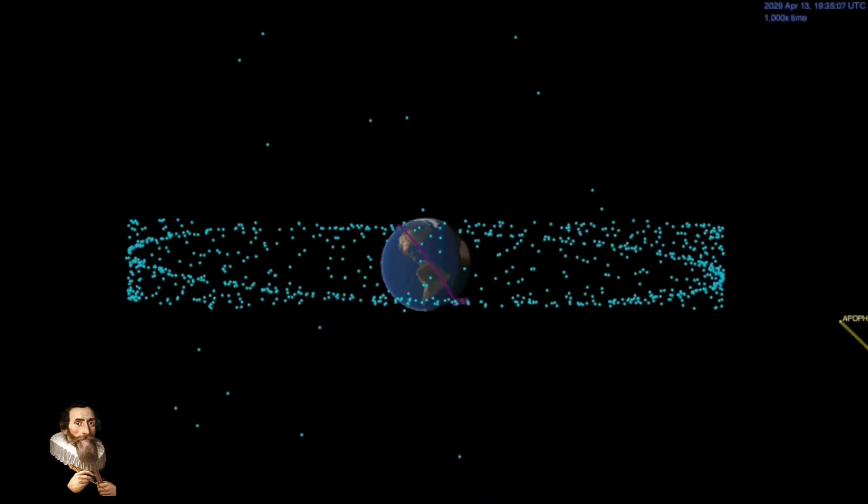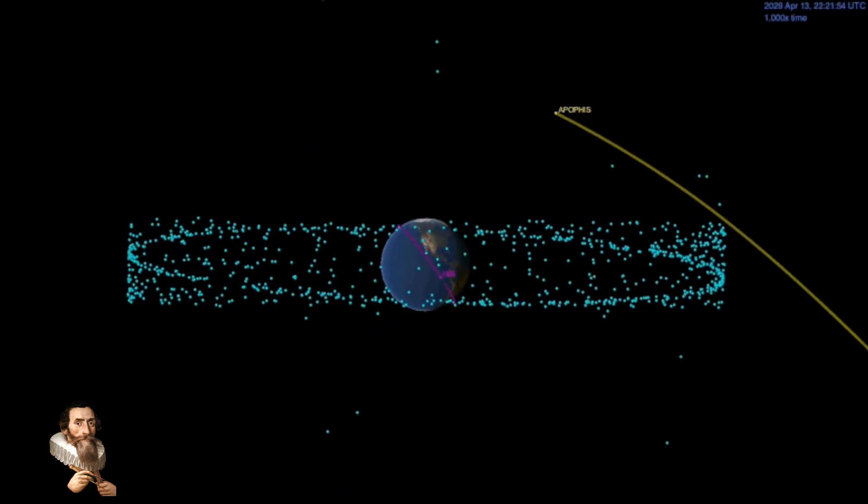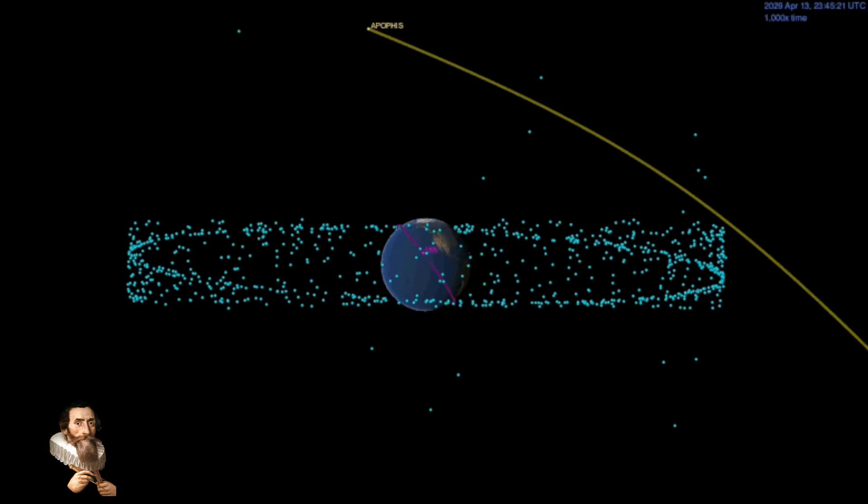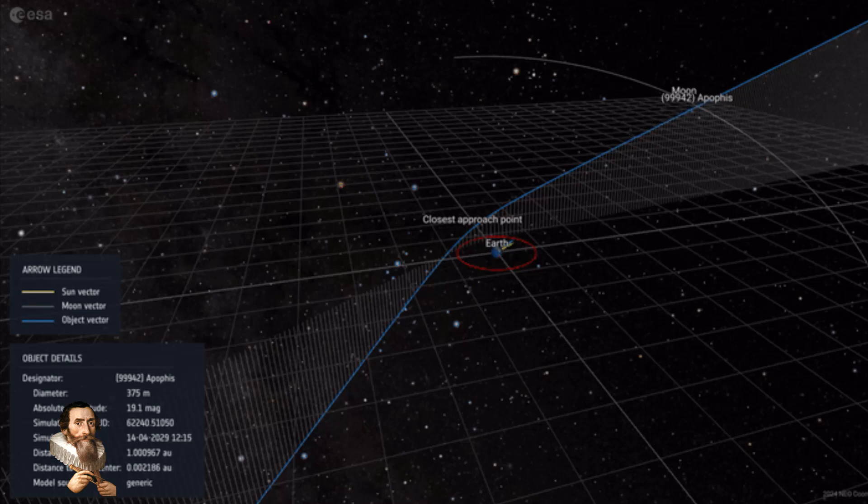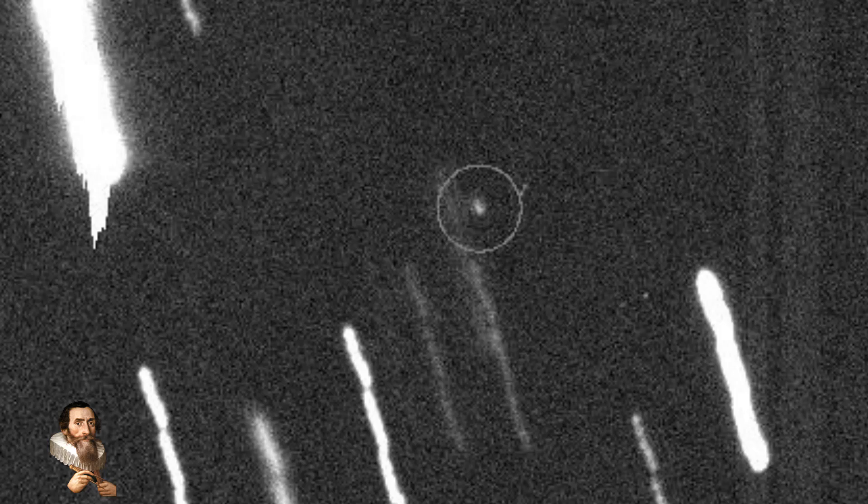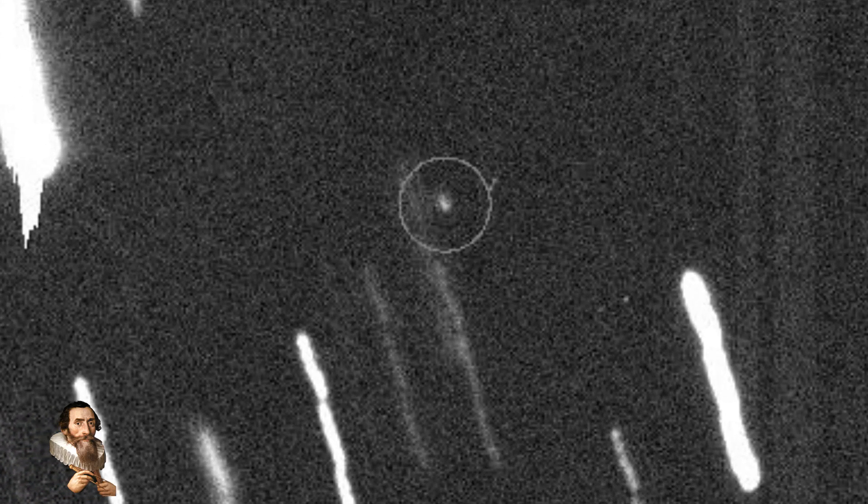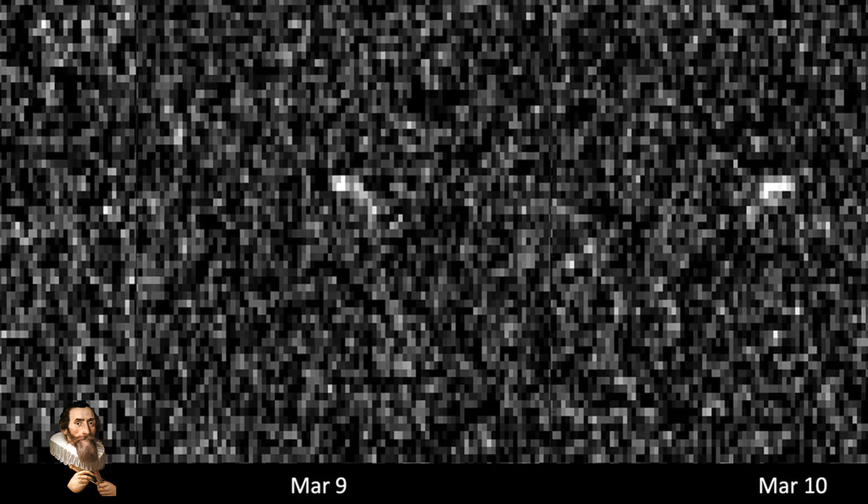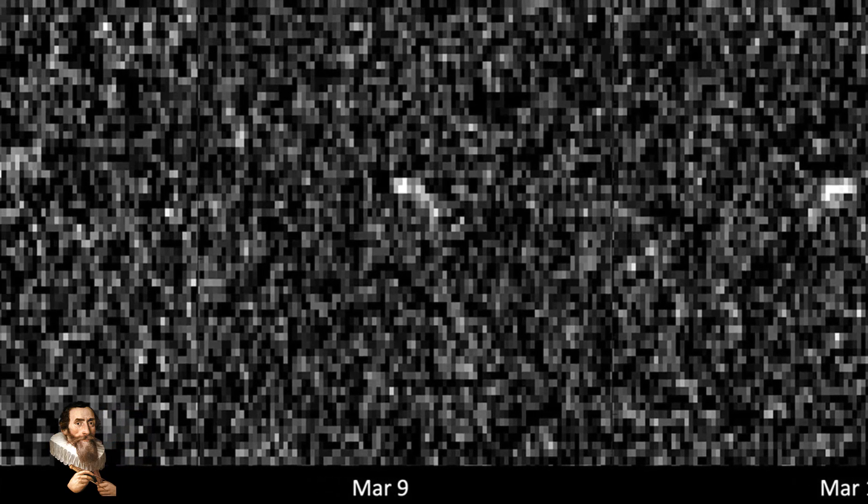The dramatic close approach of asteroid Apophis in 2029 will provide an unprecedented opportunity to study the asteroid's trajectory and physical characteristics, and this is assuming that no perturbance has taken place in the asteroid belt regarding the trajectory of asteroid Apophis. And we won't know this for another three years, until 2027, when its trajectory will be recalculated when it becomes visible from Earth.